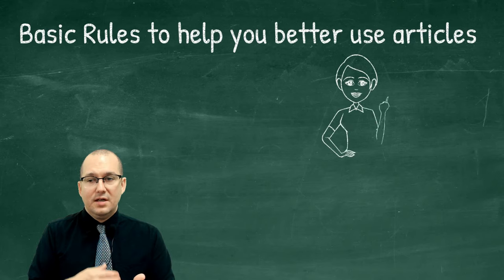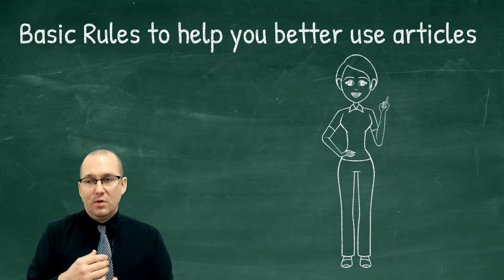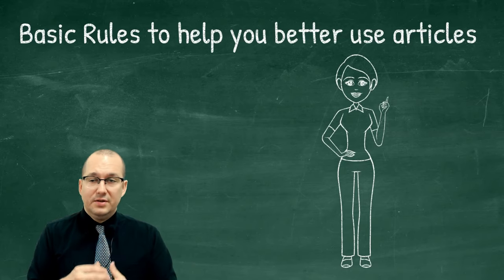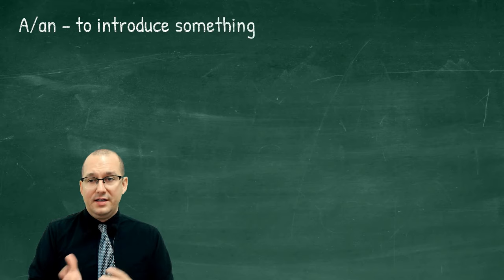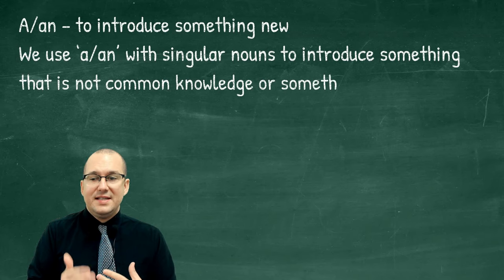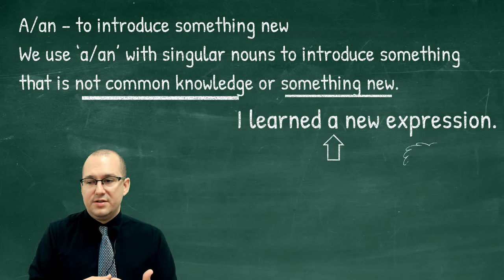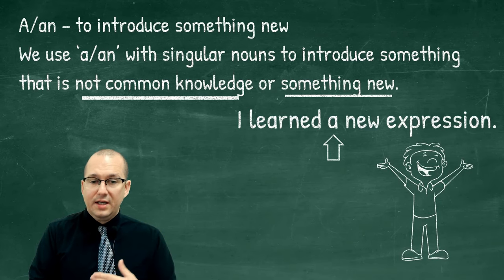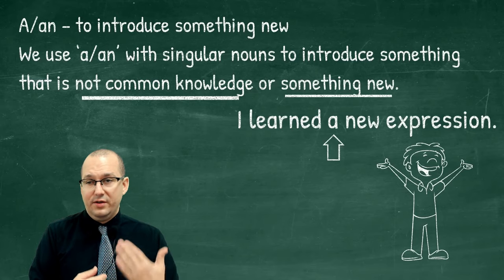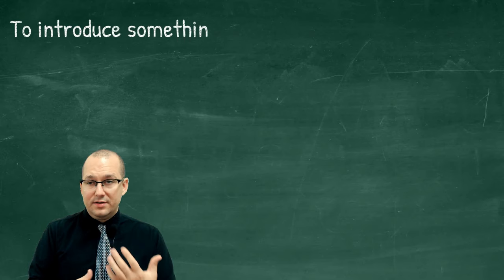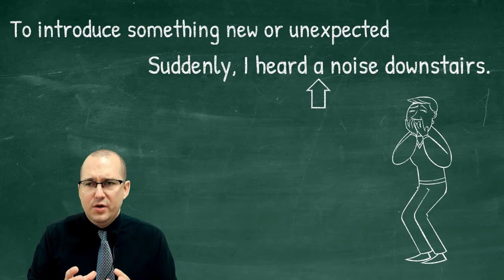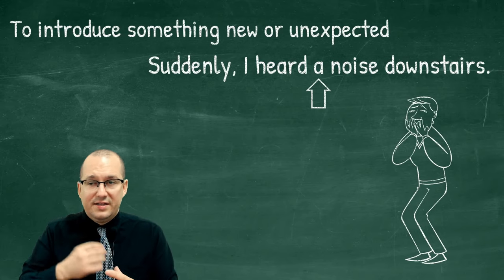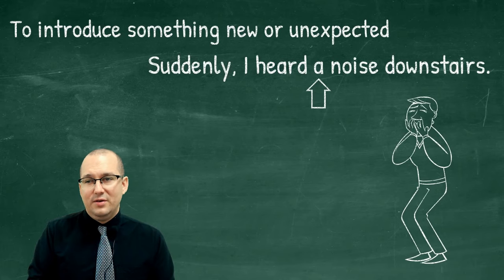Now let's move on to some basic rules to help you better use articles. We use 'a' and 'an' with singular nouns to introduce something that is not common knowledge — something new. For example: 'I learned a new expression.' It's something new and it's one. We also use 'a' or 'an' to introduce something new or unexpected when telling a story — for example: 'Suddenly I heard a noise downstairs.' It's the first time I mention it; it's something surprising or new. And 'noise' is countable, so we say 'a noise.'